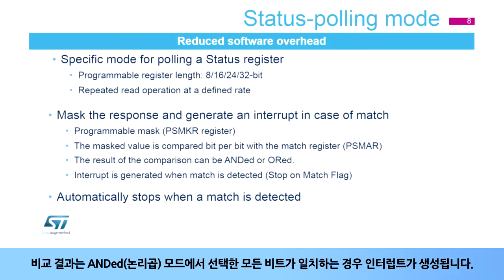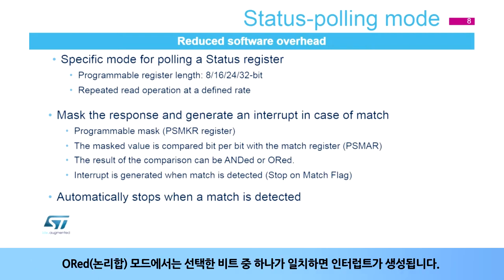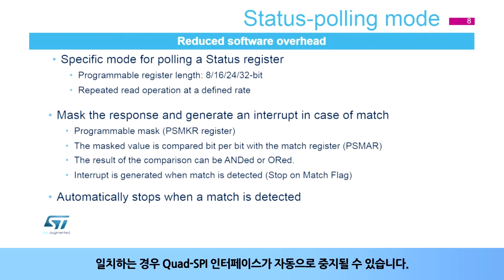The result of the comparison can be treated in two ways. In AND mode, if all the selected bits are matching, an interrupt is generated. In OR mode, if one of the selected bits is matching, an interrupt is generated. When a match occurs, the Quad SPI interface can stop automatically.